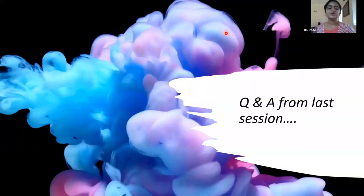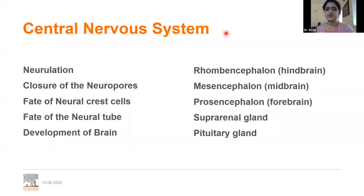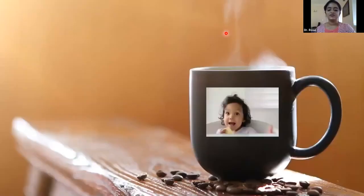Thank you. We are moving on to today's session on systemic embryology. We will try to cover the most important topics: development of the central nervous system and development of the eye. Under development of the central nervous system, you need to be familiar with neurulation, neuropore closure, fate of neural crest cells, fate of neural tube, development of brain vesicles - prosencephalon, mesencephalon, rhombencephalon - and development of the suprarenal gland and pituitary gland.